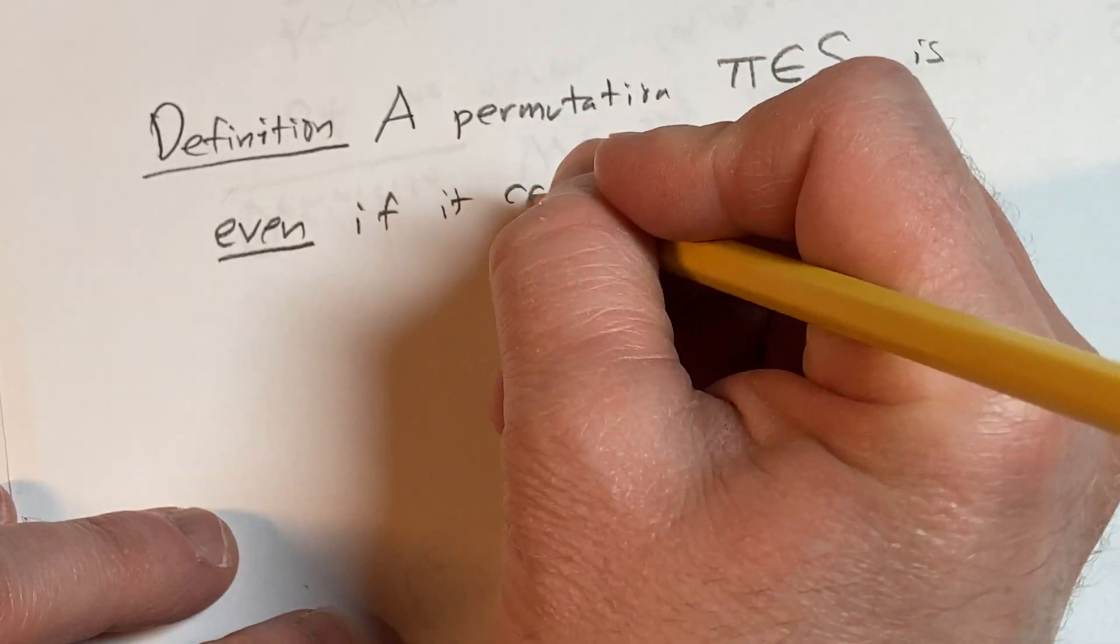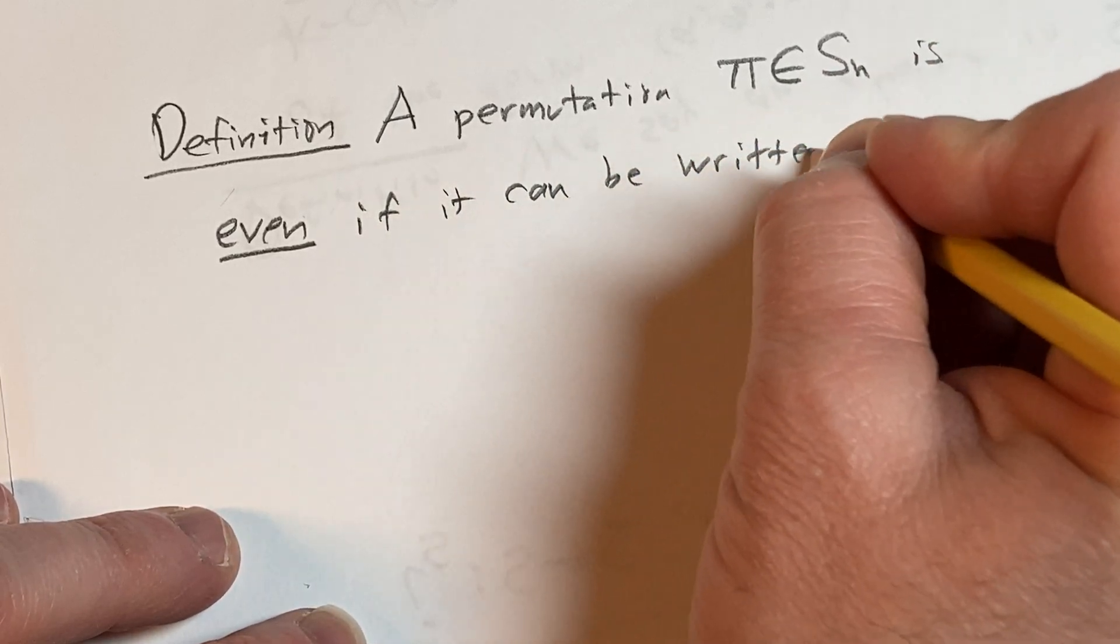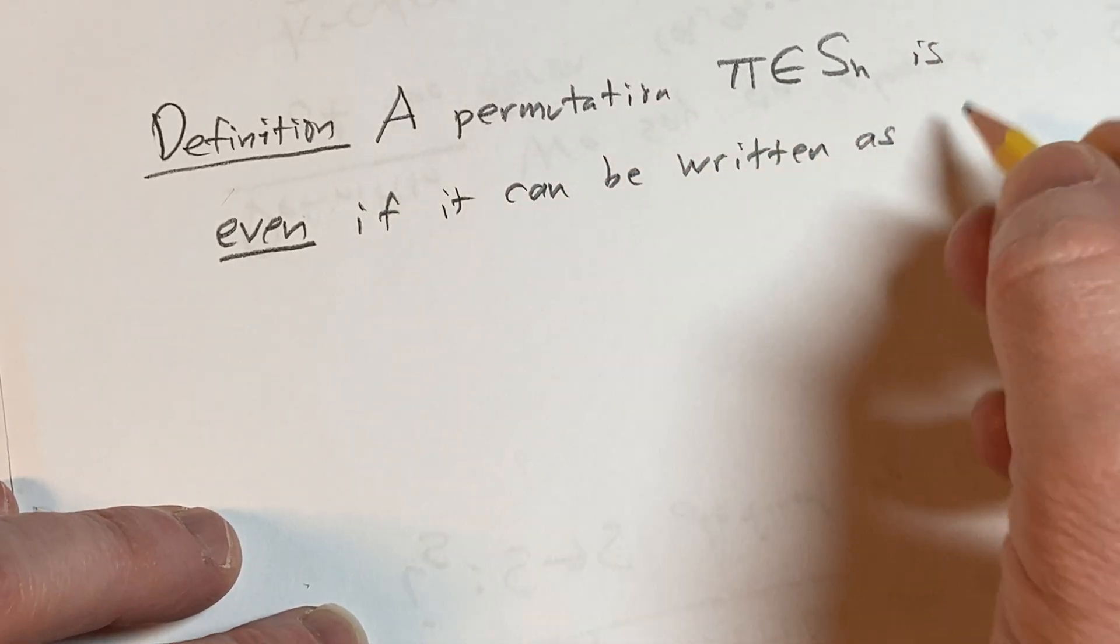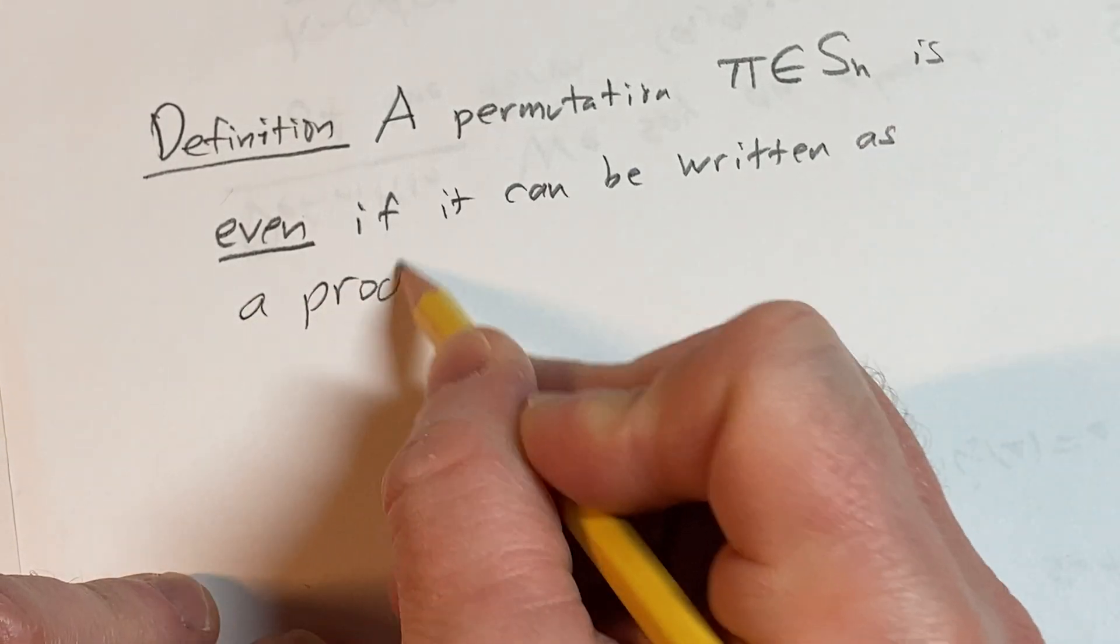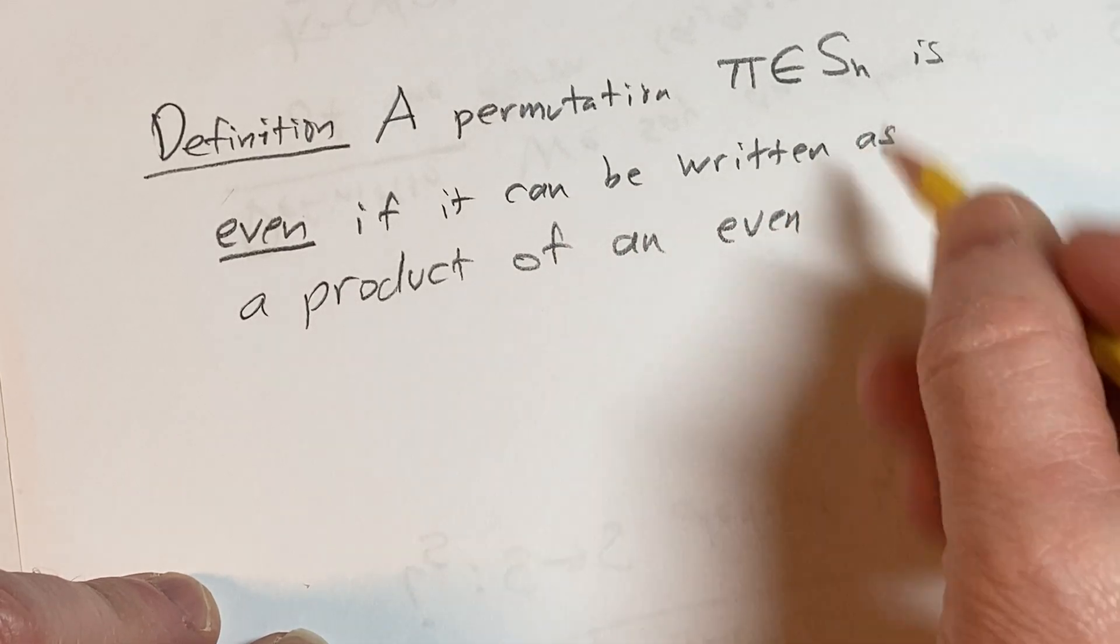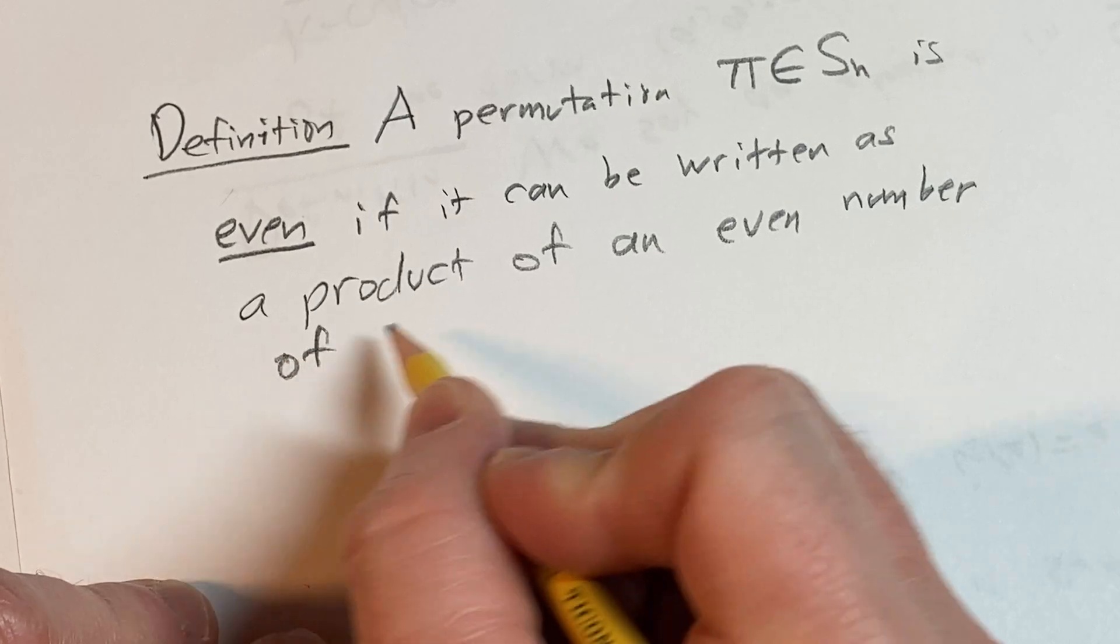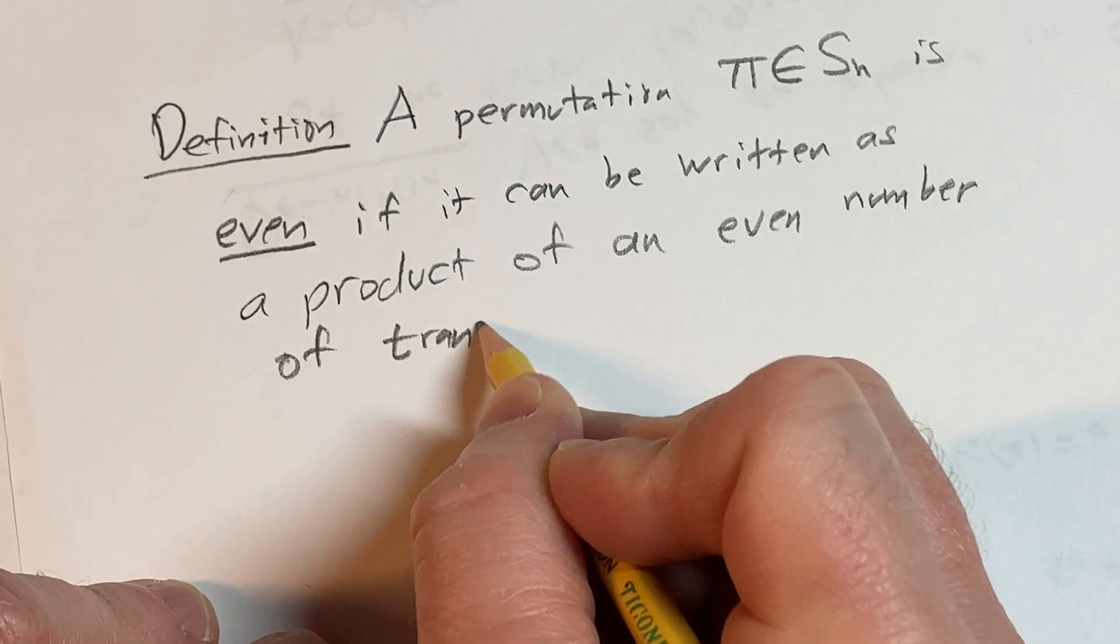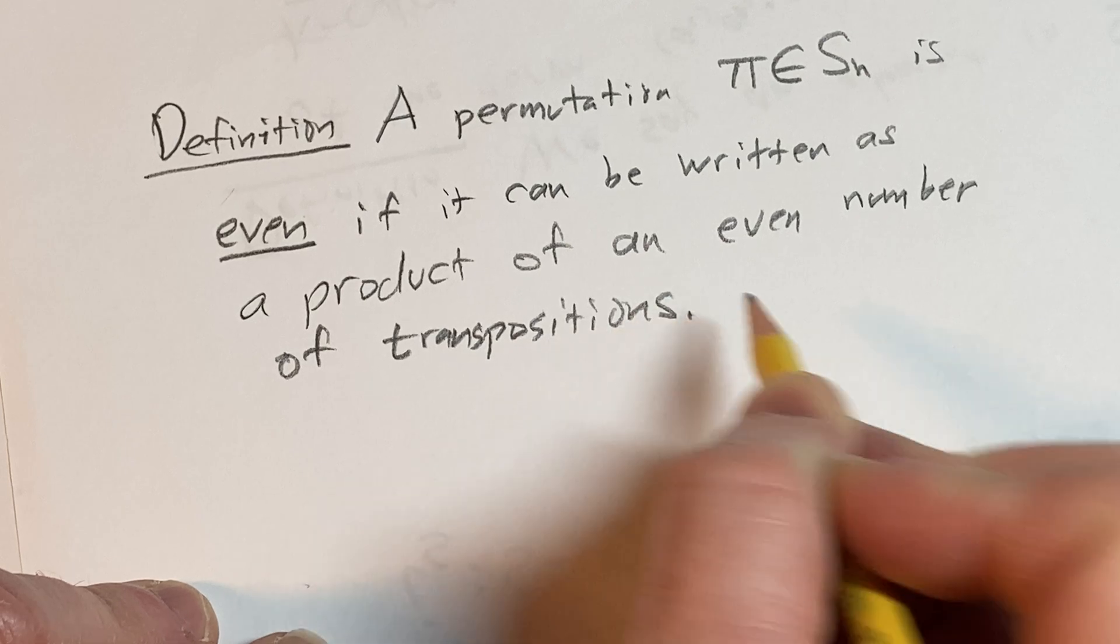So, if it can be written as a product of an even number of transpositions. Transpositions are two cycles, right?